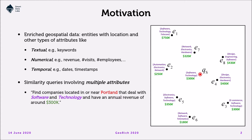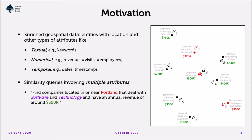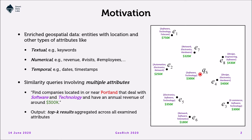For instance, consider a query that wants to find companies located in or near Portland that deal with software and technology — these are the keywords — and have an annual revenue of around $300,000. If we consider just the location, those two companies are the answer. But if only the numerical attribute is taken into consideration, we get a different answer. And if we consider just the textual attribute, we get yet another different answer based on matching keywords. Our objective is to find the top K results based on aggregated scores across all examined attributes, and the answer may differ from the previous ones.